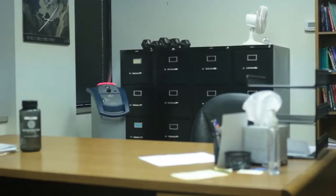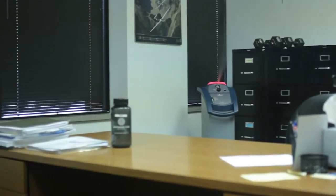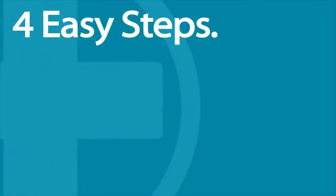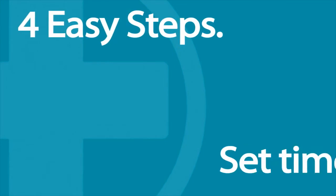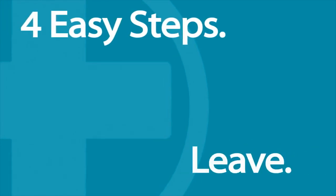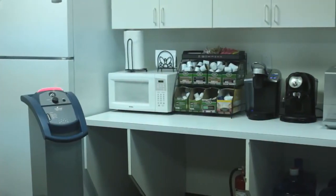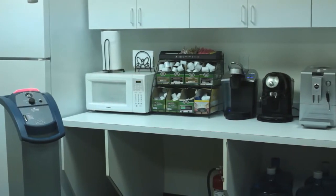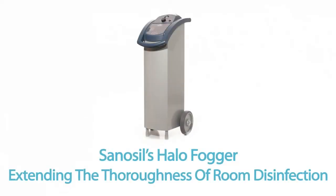The Halo Fogger's ease of use and efficient performance makes it the perfect choice to complement your regular cleaning and disinfecting practices. The Halo's four easy steps of fill, set time, press start, and leave the room are all it takes to achieve maximum efficacy. With a disinfecting mist that reaches deep into places difficult to get to, such as cracks and crevices, places that challenge regular cleaning and disinfecting methods. Sanosil's Halo Fogger, extending the thoroughness of room disinfection.